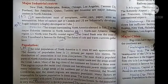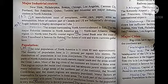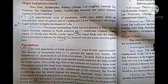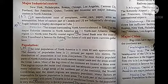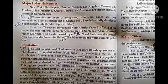The oceans surrounding North America abound in fish. The two major fishery centers in North America are the North East Atlantic Coastal region and the North West Pacific Coastal region. The Grand Bank near the coast of Newfoundland is famous for fishing. North America is very rich in fisheries.